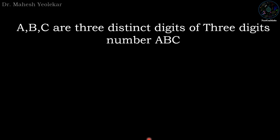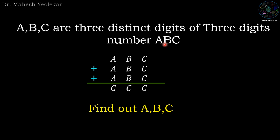Hello friends. This is Mahesh Yulekar and you are watching NextGenMass. ABC are three distinct digits of three digit number ABC such that ABC plus ABC plus ABC equals CCC. Find ABC.